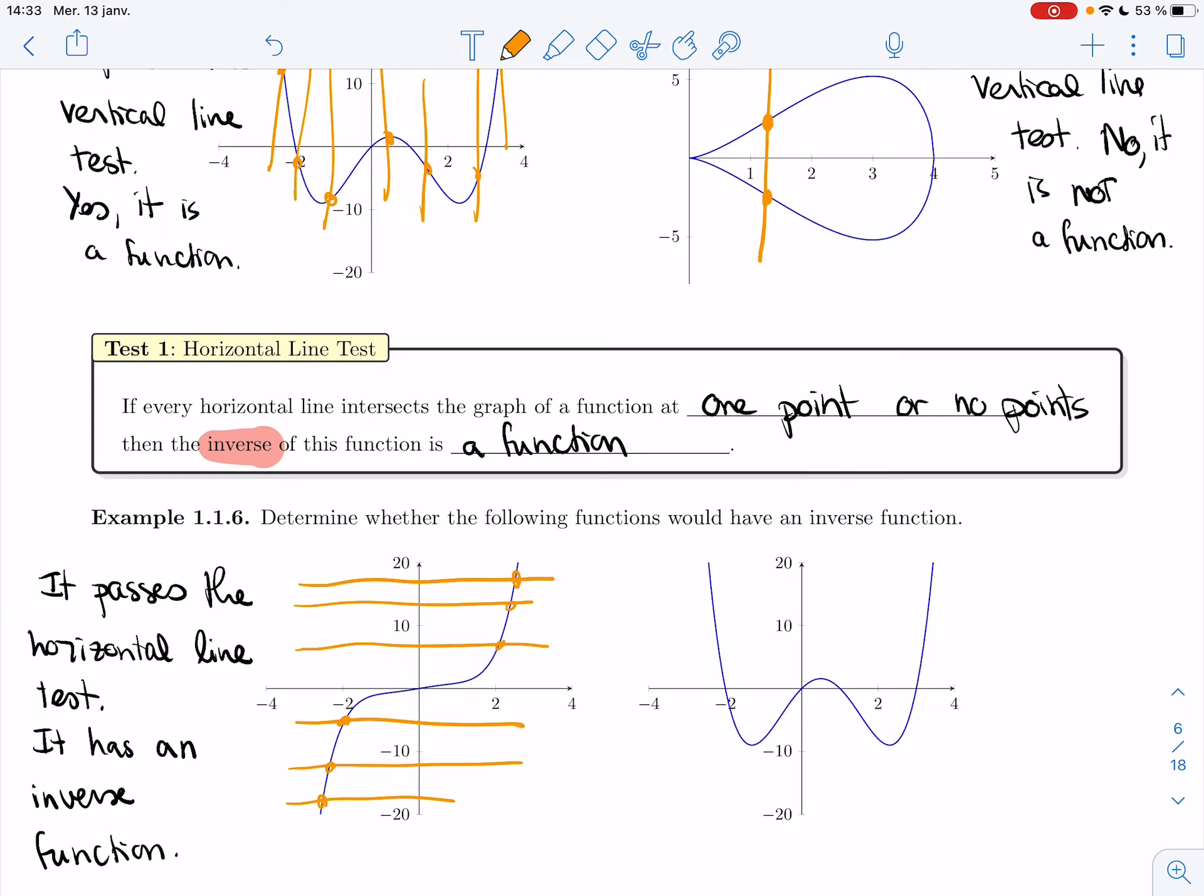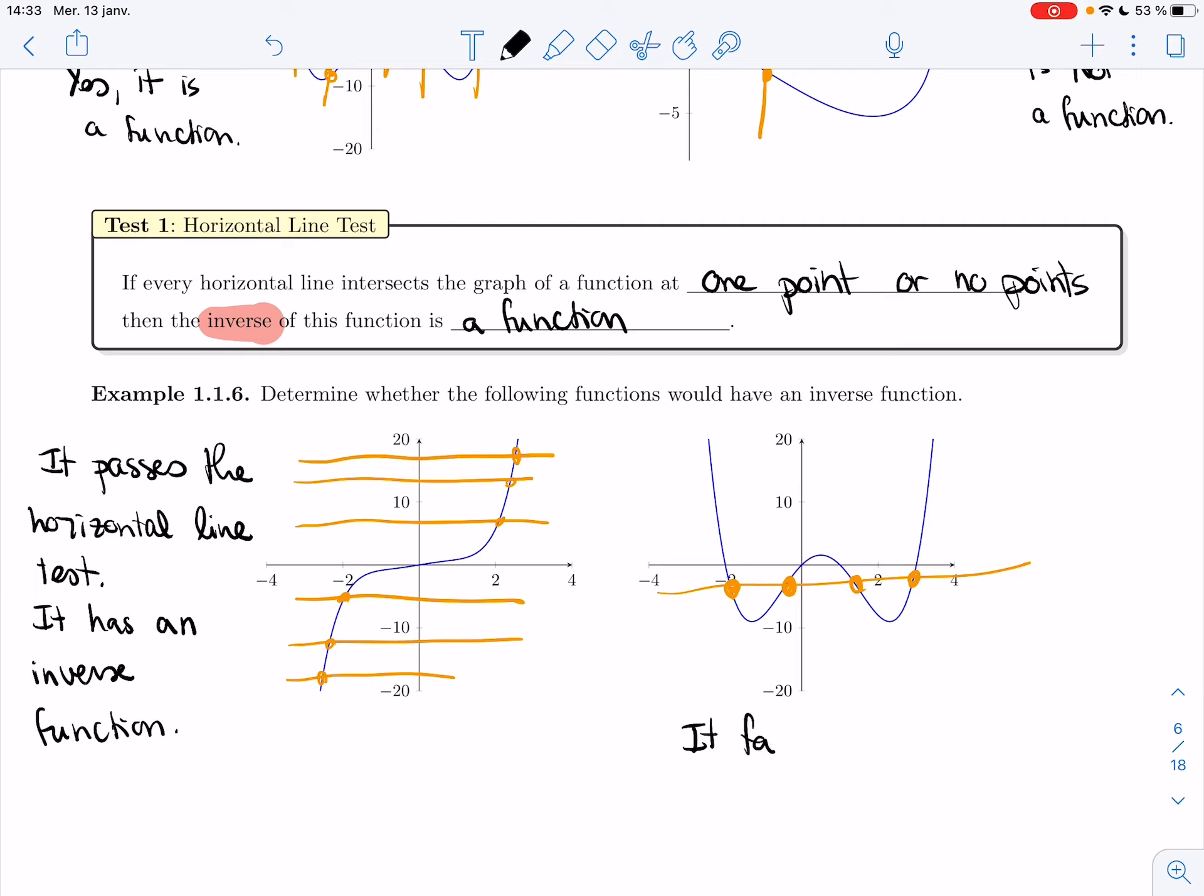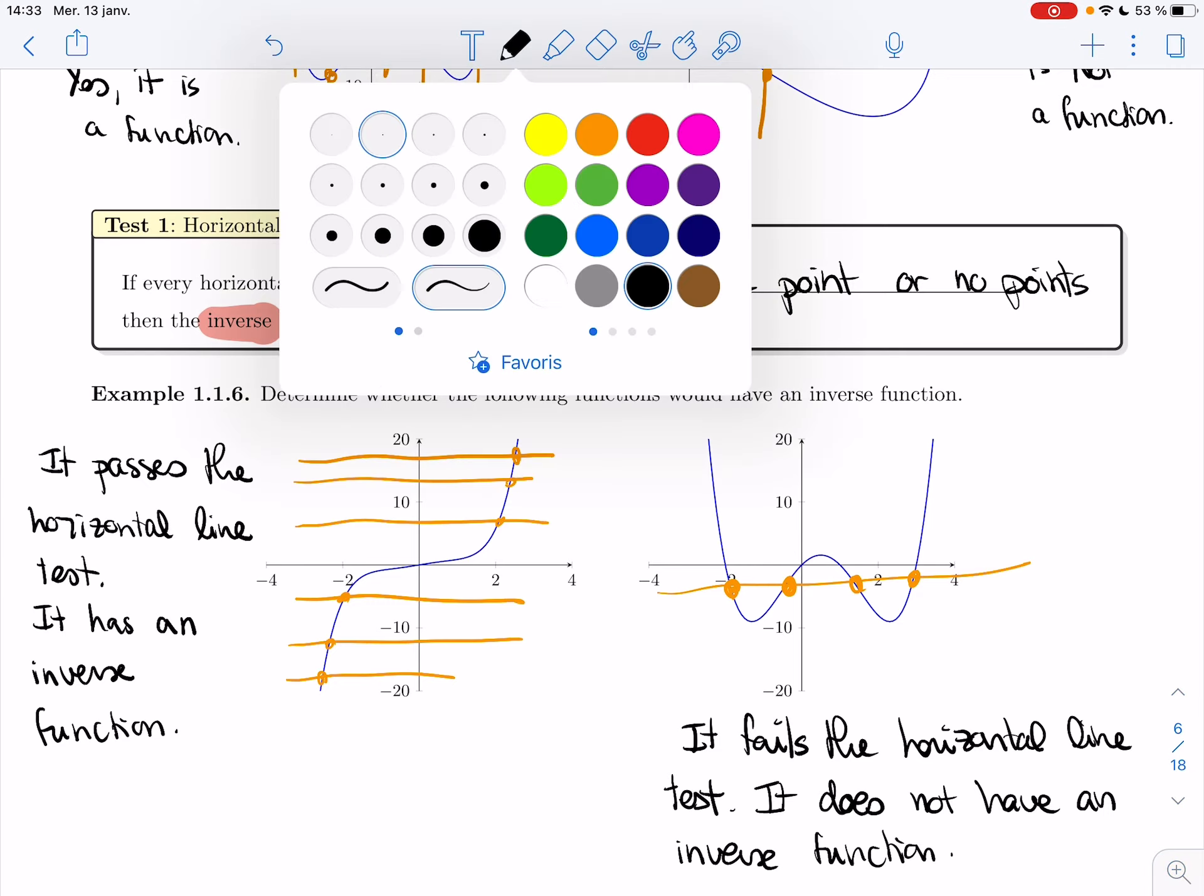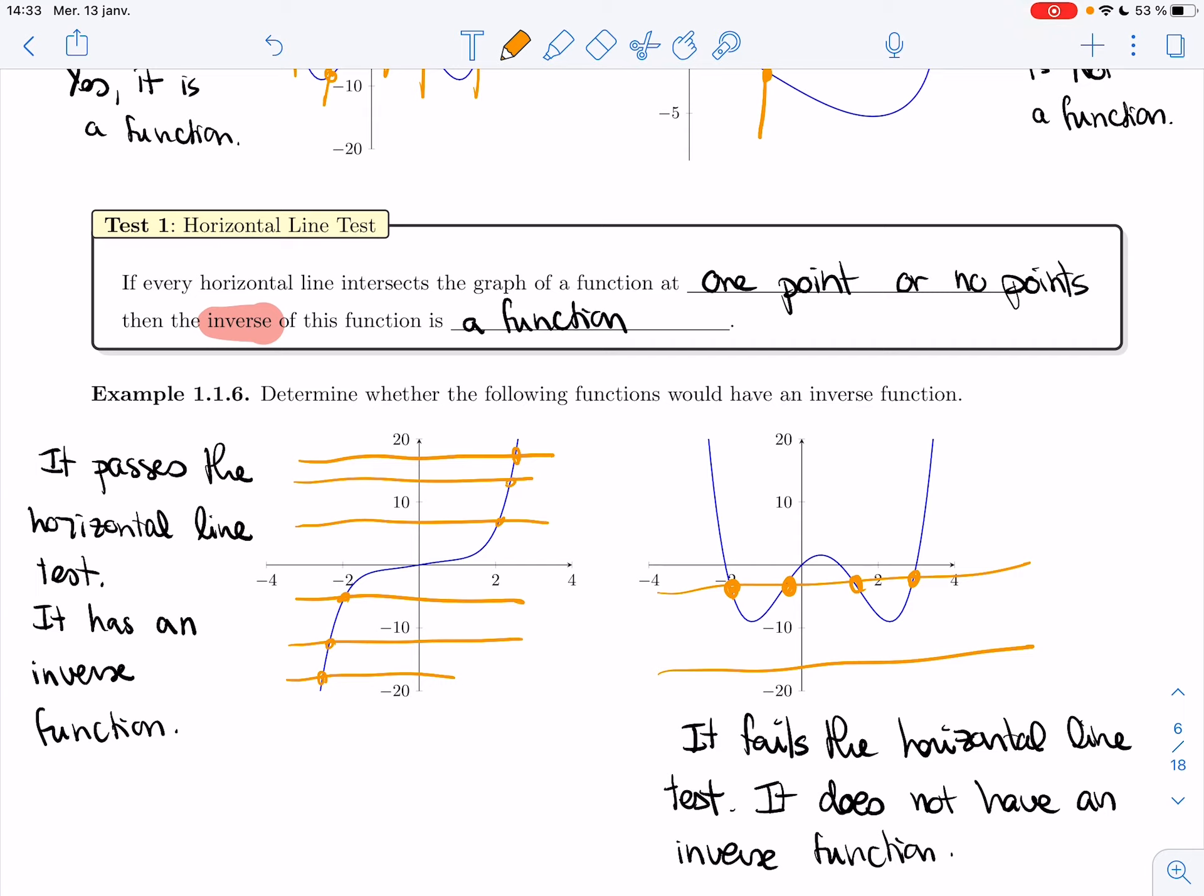Now for this one, I just need to graph one, whatever I want. As soon as it hits more than once, it would fail the horizontal line test. And so it does not have an inverse function. Notice that some lines do intersect in no points or one point. This line, for example, doesn't intersect at all. As soon as one horizontal line hits more than once, you're done. No chance that you get an inverse function.